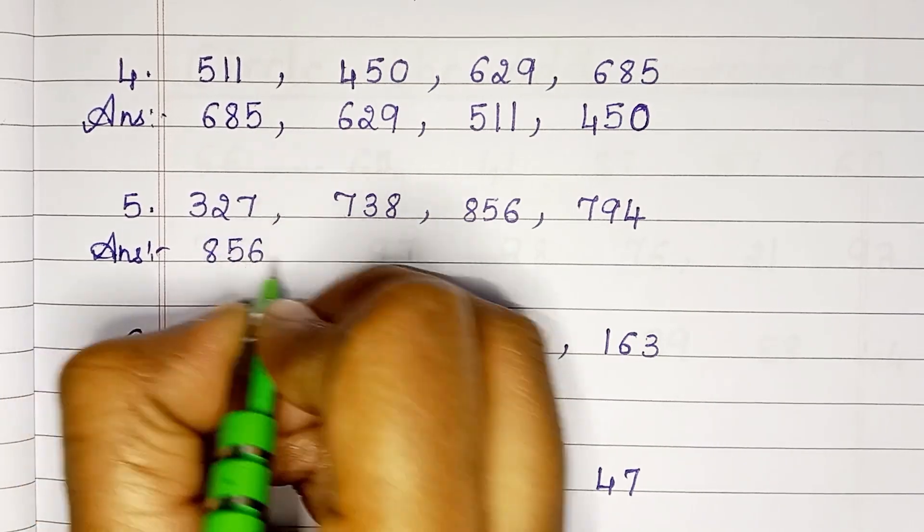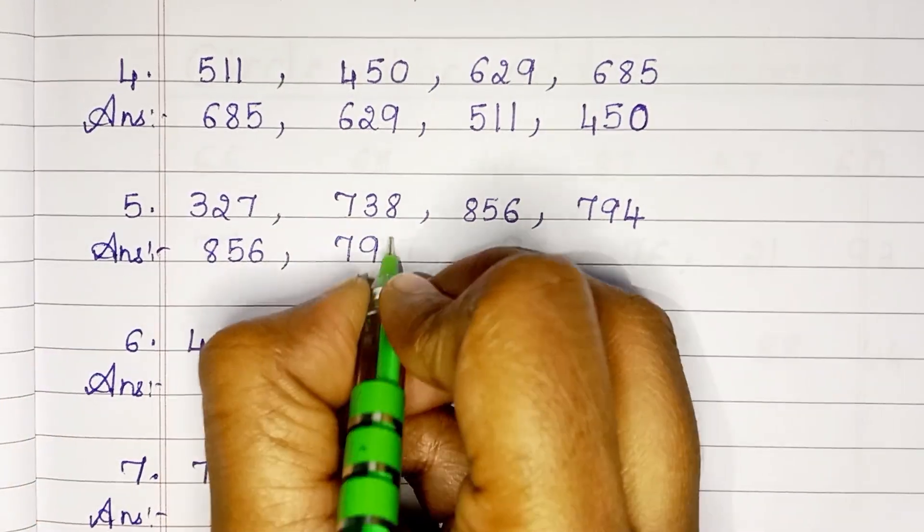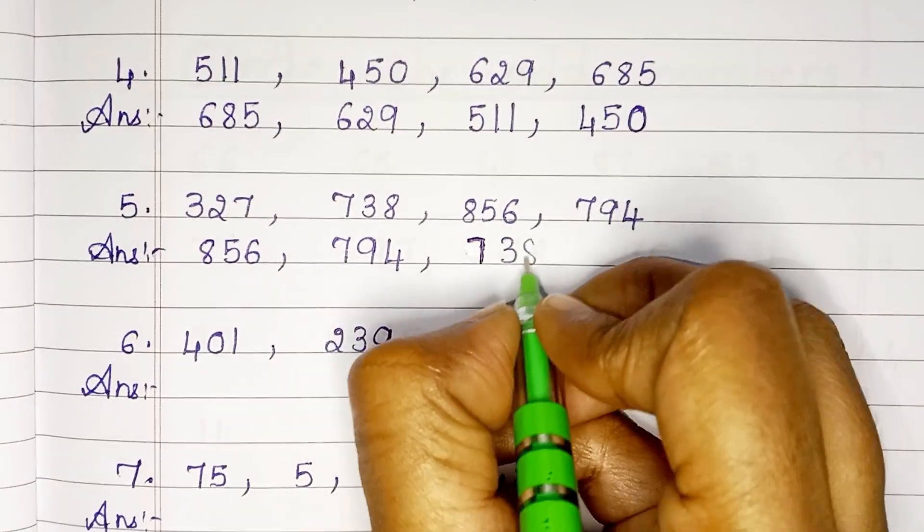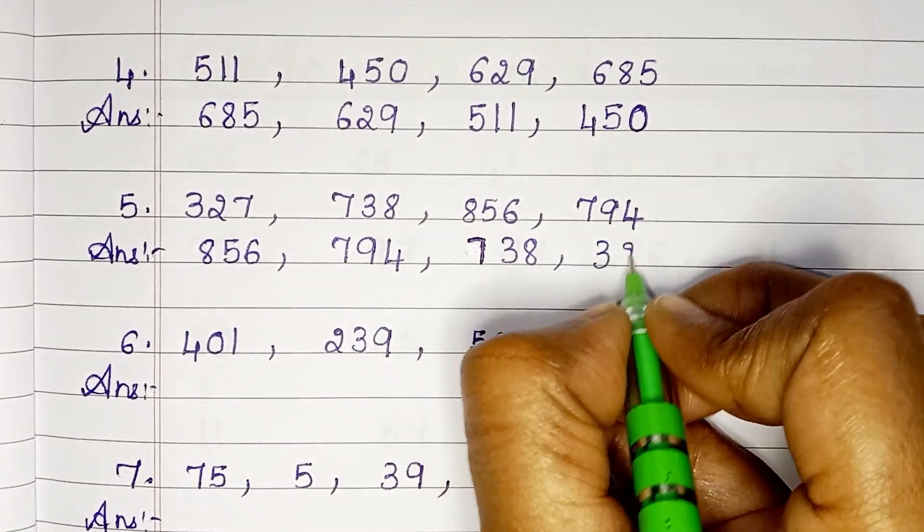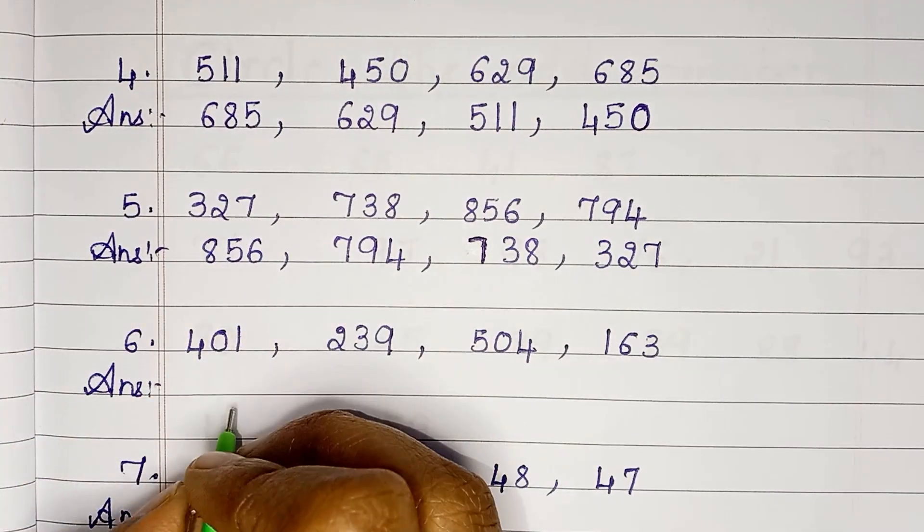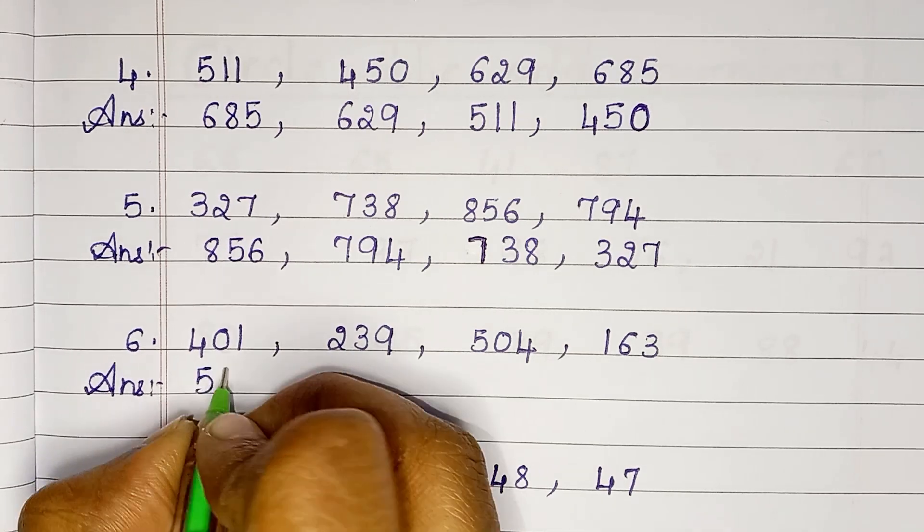Here 327, 738, 856, 794. So the largest number is 856, then 794, 738, 327.